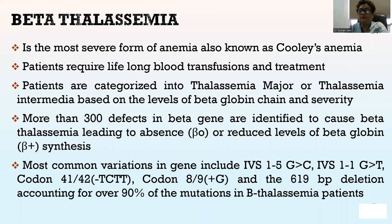Based on the type of defective globin chain, thalassemia is divided into beta, alpha, and delta, and may be co-inherited causing alpha-beta-thalassemia or delta-beta-thalassemia. Beta-thalassemia is the most severe form of anemia, also known as Cooley's anemia; patients require lifelong blood transfusion and treatment. Patients are categorized as thalassemia major or thalassemia intermediate based on the levels of beta-globin chain and severity. More than 300 defects in the beta gene have been identified; most common mutations include IVS1-5G>C, IVS1-1G>T, codon 41/42 -TCTT, codon 8/9 +G, and the 619 base pair deletion, accounting for over 90% of mutations in beta-thalassemia patients.